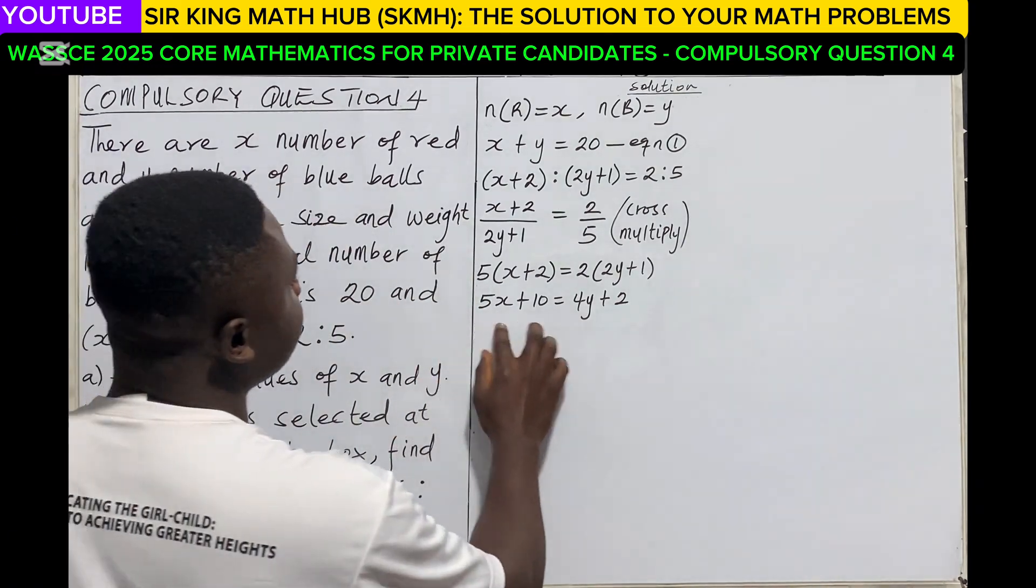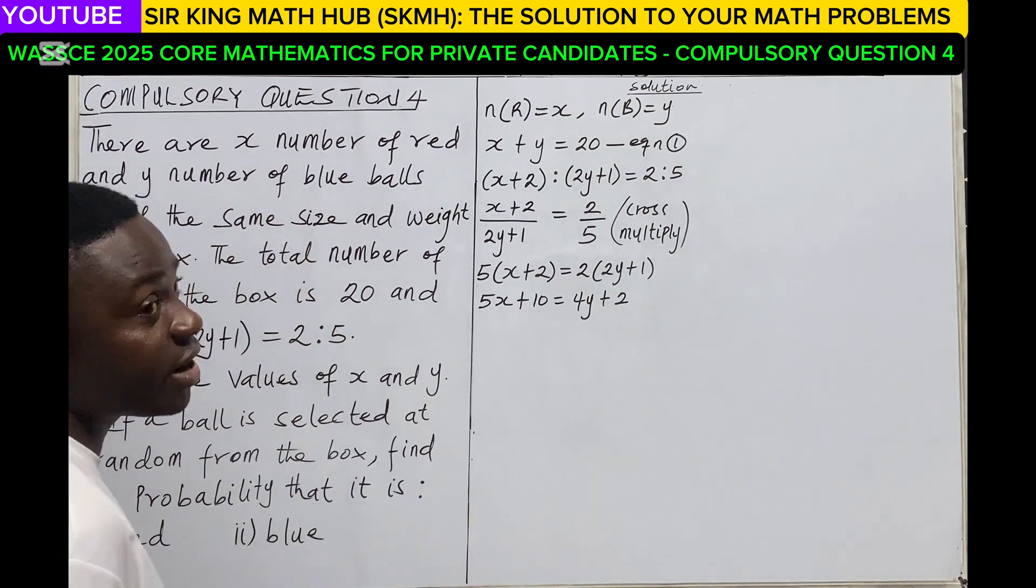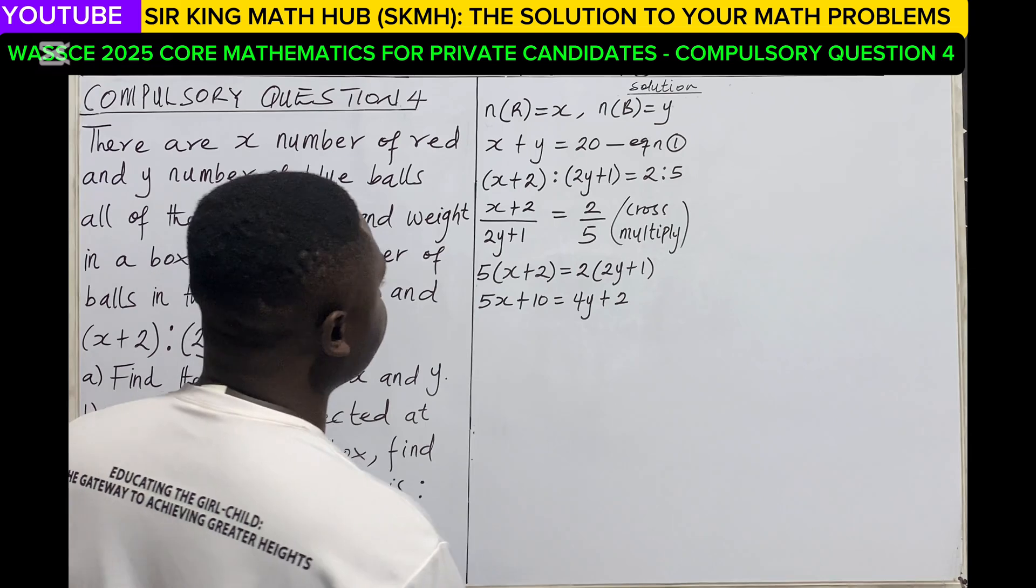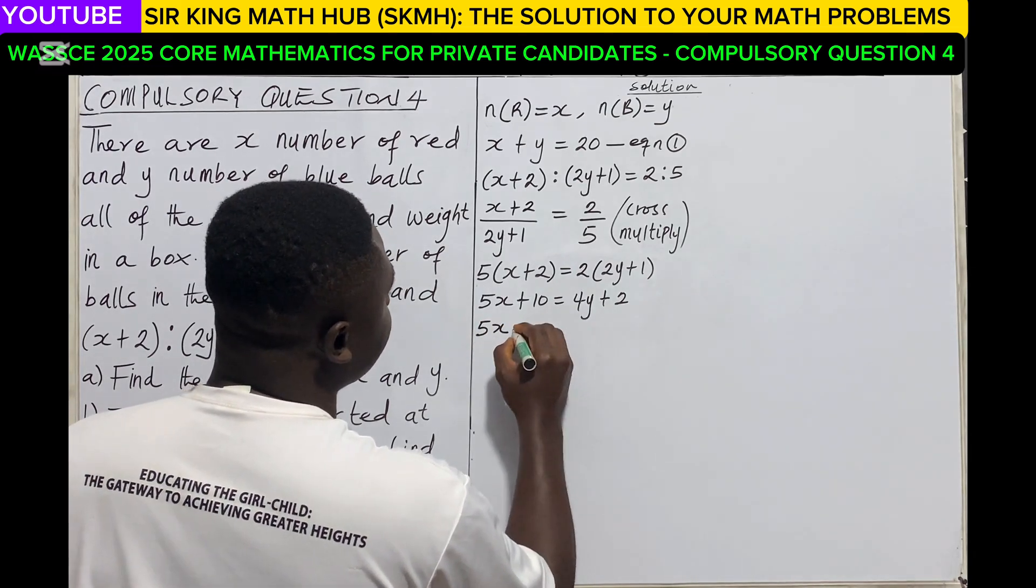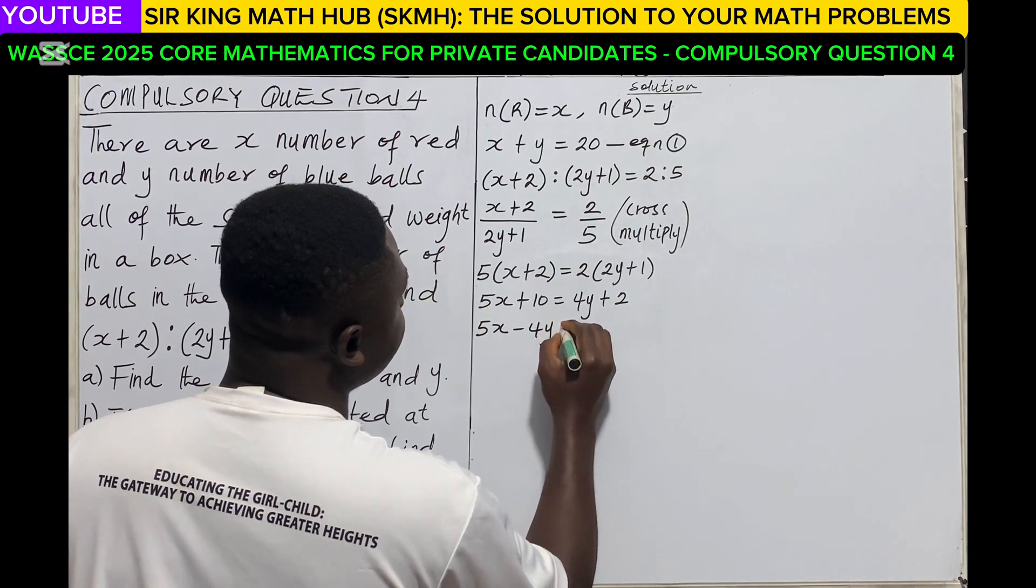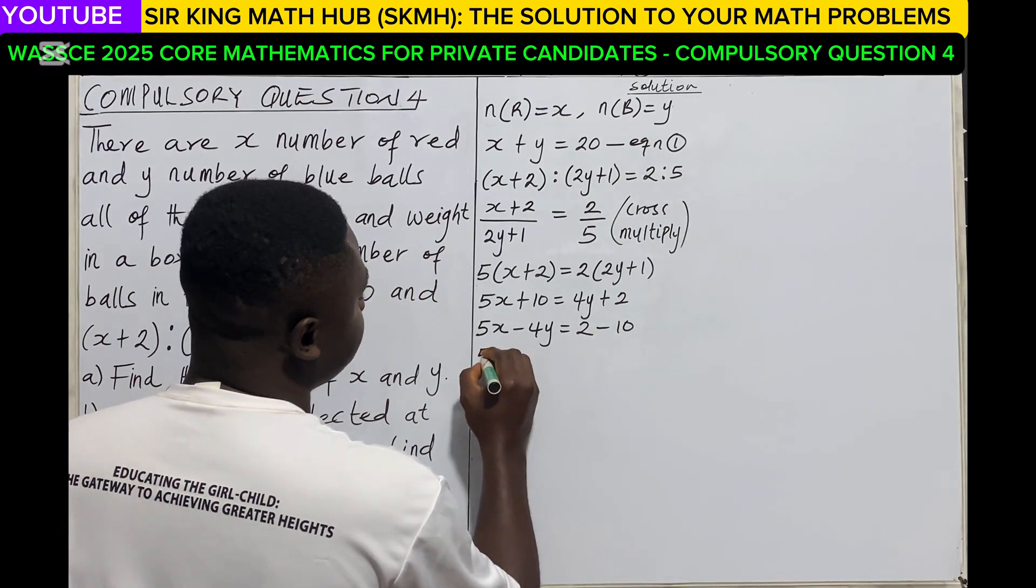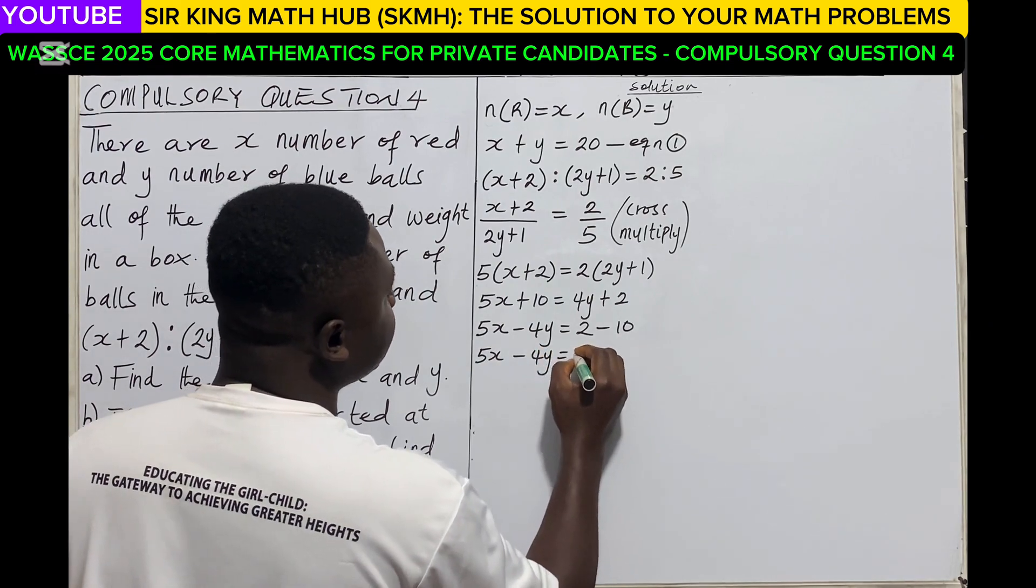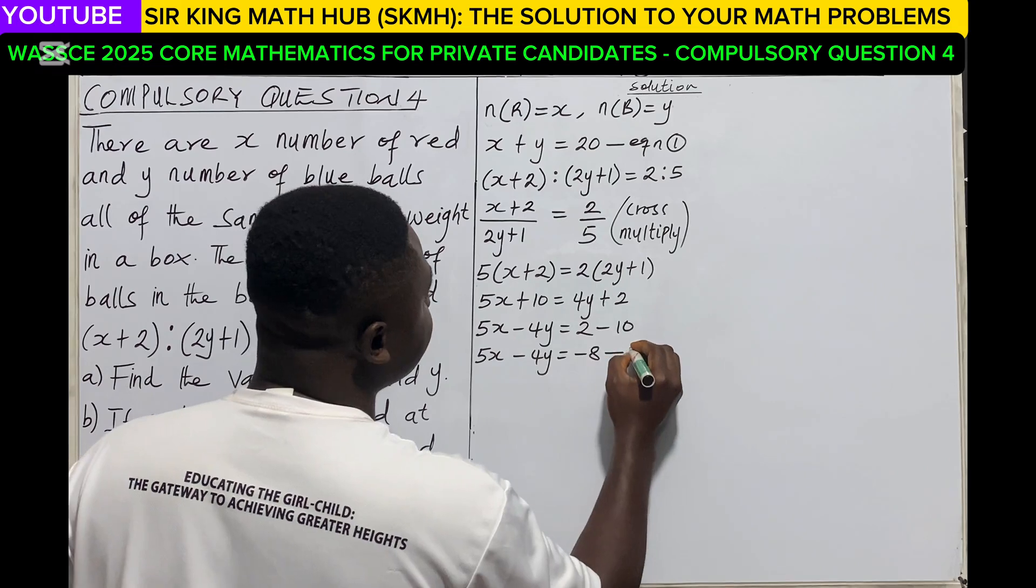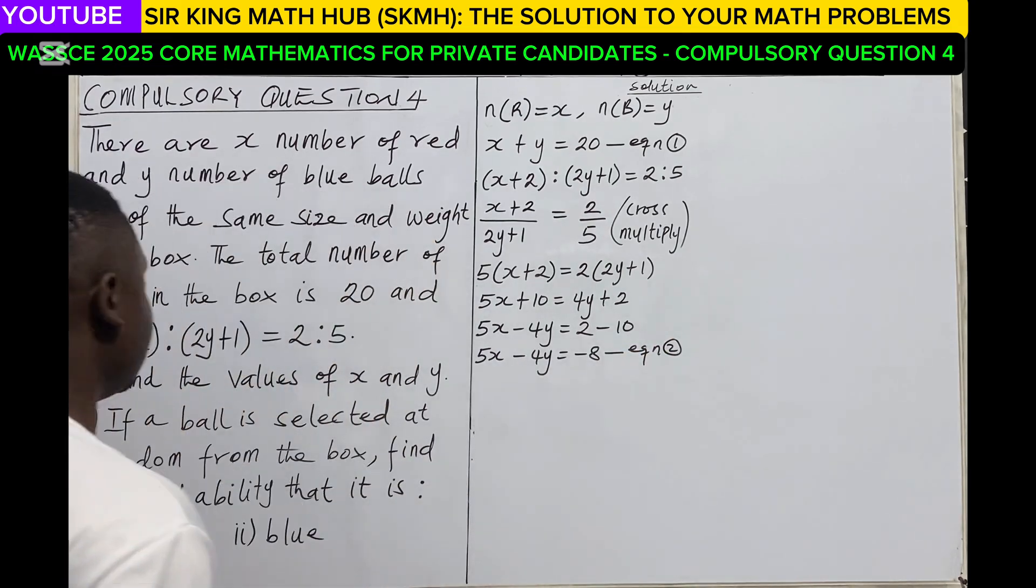So let's express this equation in standard form. We are grouping variables on the left and numbers on the right. So we have 5x minus 4y is equal to 2 minus 10. Finally, we have 5x minus 4y is equal to negative 8. So this is our second equation.